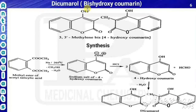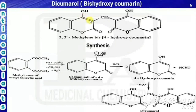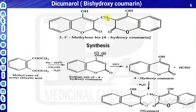The next drug is dicumarol, otherwise called bishydroxycumarin. Its structure has one benzene ring connected with a six-membered ring having oxygen as the heteroatom, which is called coumarine. The numbering starts from oxygen: one, two, three, four. At the fourth position there is a hydroxy group, making it 4-hydroxycoumarin. Both ends are 4-hydroxycoumarin units.